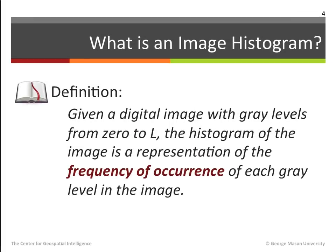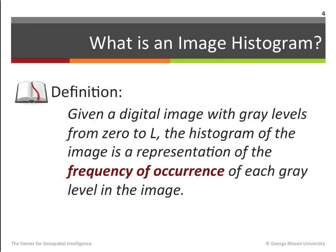This leads to the question: what is an image histogram? Given a digital image with gray levels from 0 to L, where L is the maximum gray level, for example 255, the histogram of the image is a representation of the frequency of occurrence of each gray level in the image. In other words, the histogram is a tool that enables us to answer: given a gray level image, how many pixels are there for every gray level? The term frequency of occurrence relates here to the number of pixels at each gray level.